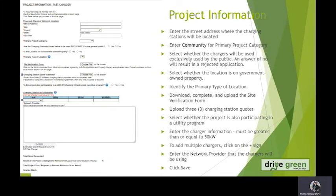This will now bring you to the Project Information page where we will get the specific information about your project. We need you to enter the proposed charging station's location — that's the street address up here. For Primary Project Category, please choose Community. Then you will select whether the chargers will be used exclusively by the public. Be warned that an answer of No will result in a rejected application. Please select whether the location will be on government-owned property and then identify the primary type of location. This is a drop-down — you can choose one of the options.